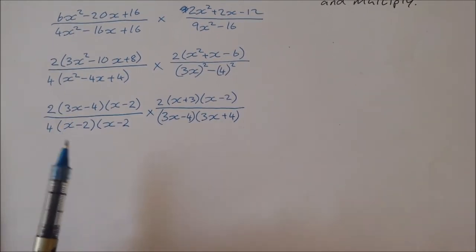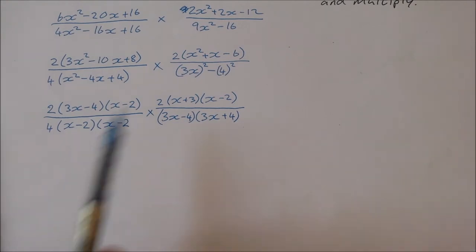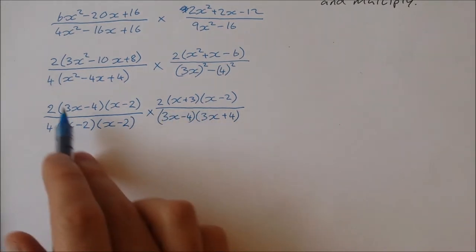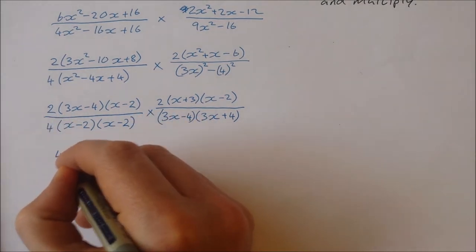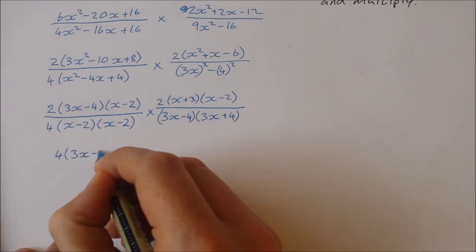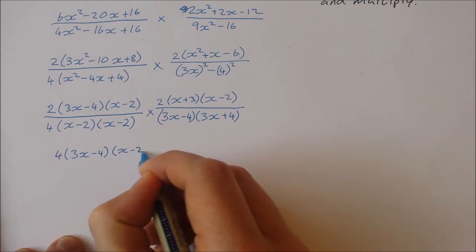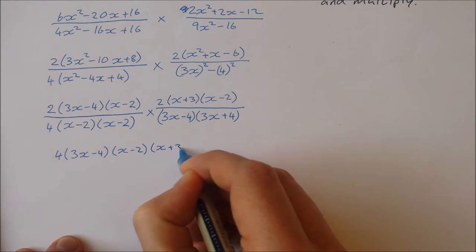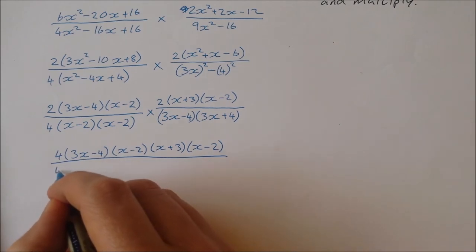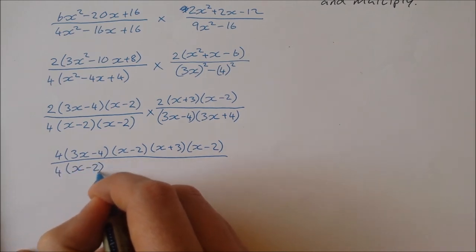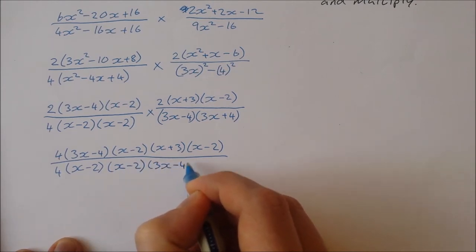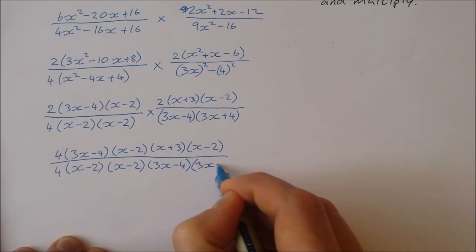We're nearly there. I just have to multiply top by top and bottom by bottom, and we'll see what cancels. Multiplying the tops: 2 times 2 gives 4, then the individual factors are (3x minus 4), (x minus 2), (x plus 3), and (x minus 2). On the bottom I have 4, then (x minus 2), (x minus 2), (x minus 2), (3x minus 4), and (3x plus 4).